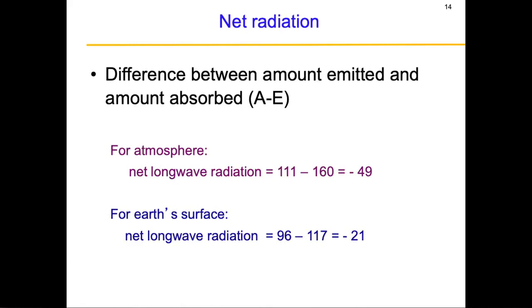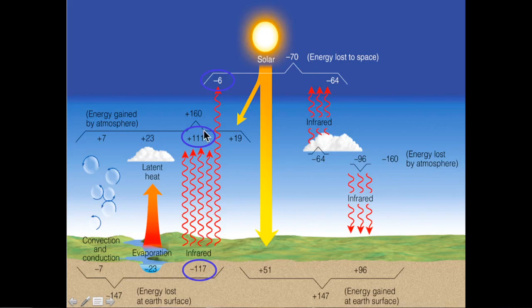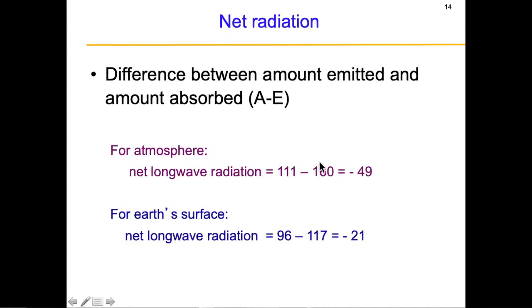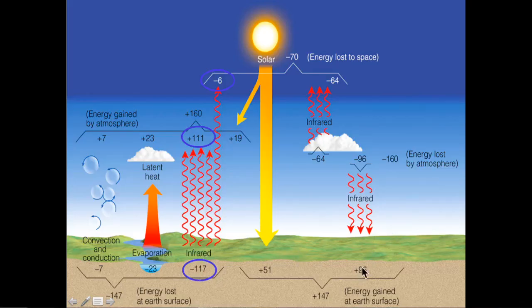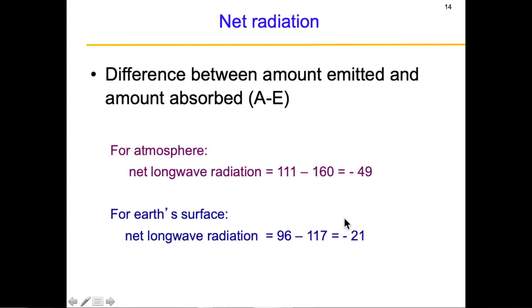Let us do a net balance, separately for long wave and short wave, for the atmosphere and earth's surface. For the atmosphere, long wave absorbed is 111 and emitted is 160 — so there is a net deficit of minus 49 units. For the earth's surface, long wave absorbed is 96 and emitted is 117 — so minus 21. For short wave, atmosphere absorbs 19 and ground absorbs 51. The net all-wave balance for the atmosphere is 19 minus 49 equals minus 30.